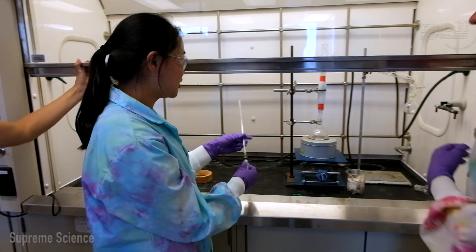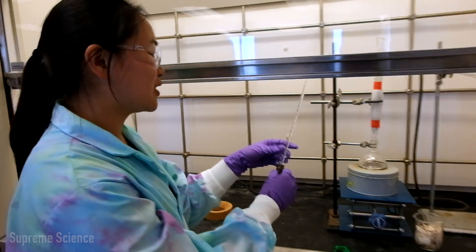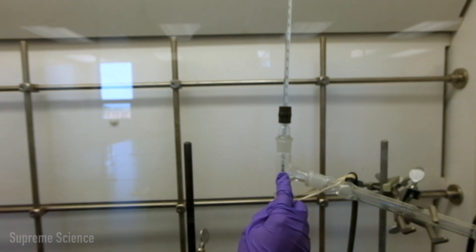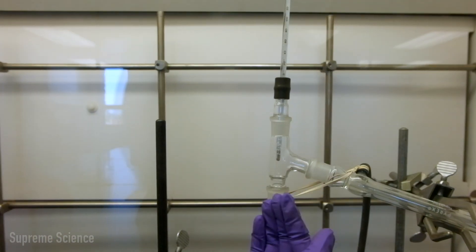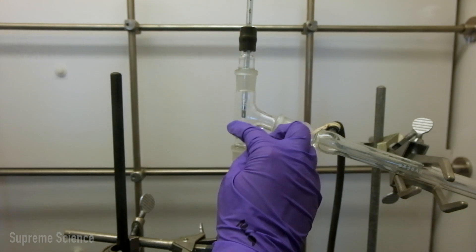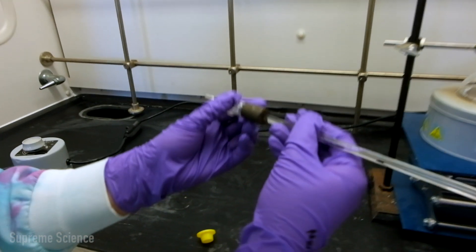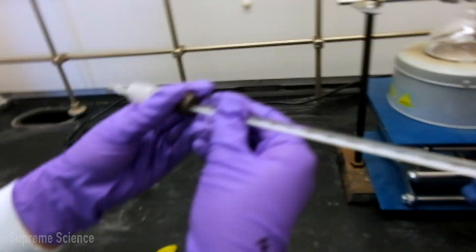The last thing that you want to do is add your thermometer, which is in your thermometer adapter. What's important is you want your thermometer to be right in the middle between the still head and the condenser. So you will take this one out and adjust it like this, holding it tightly and close.